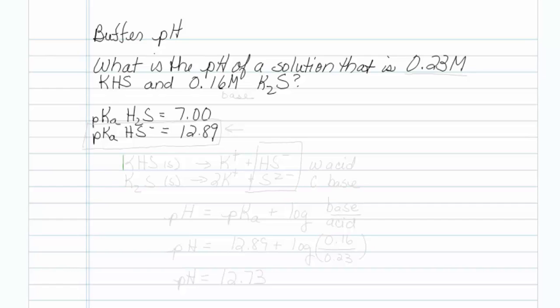What is the pH of a solution that is 0.23 molar potassium hydrogen sulfide and 0.16 molar potassium sulfide? And we're given the following pKa values.